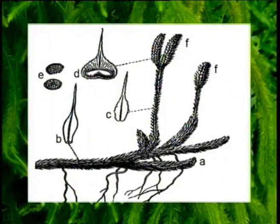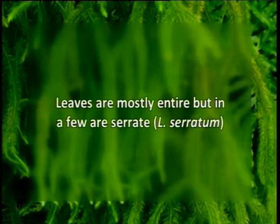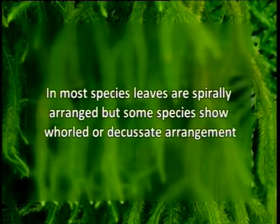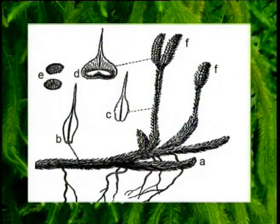The plants are rhizomatous. Stems are clothed with small, simple, sessile leaves of broad base and a single unbranched vein. They range from minute scales to broad leaves 2 to 3 cm long. Leaves are mostly entire, but in a few are cyrate, as in Lycopodium cyratum. In most species, leaves are spirally arranged, but some species show whorled or decussate arrangement. The branching is fundamentally dichotomous. Roots are adventitious and occur on the under surface of the stem.